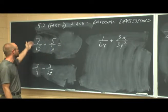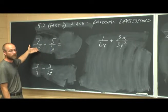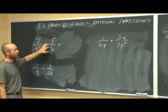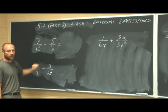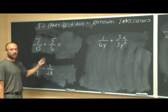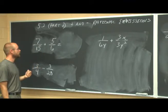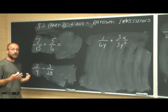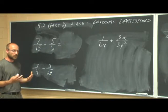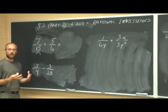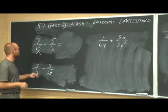Here we have 7/15, just a fraction — a rational number — plus 5/6, another rational number. But in order to add these, we have to have a common denominator. The key to finding that common denominator, what we call the least common denominator — we want to keep our numbers as small as possible — is to factor. And we're going to do that with our rational expressions.